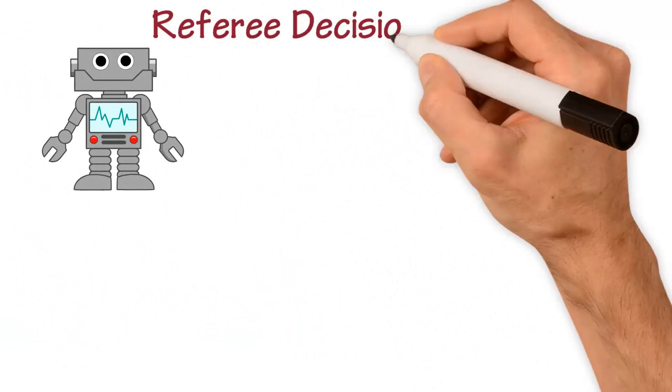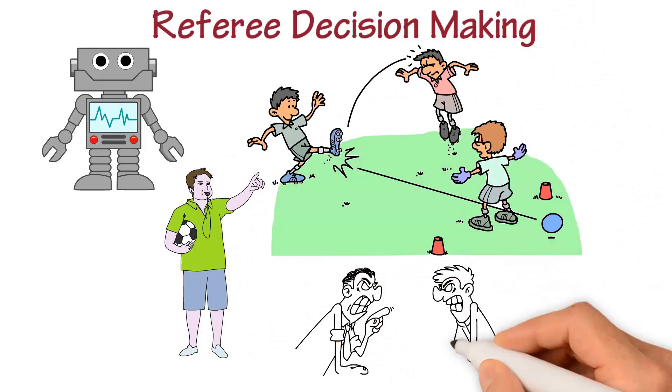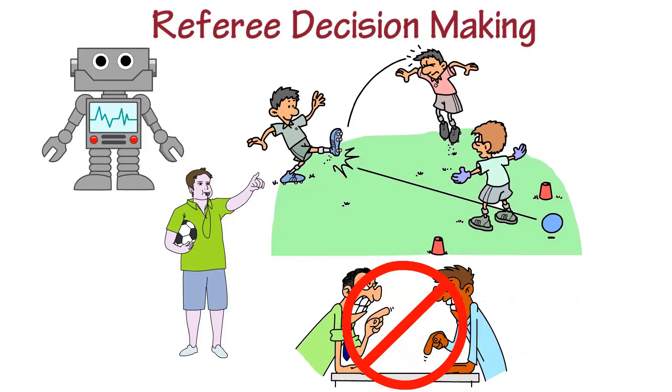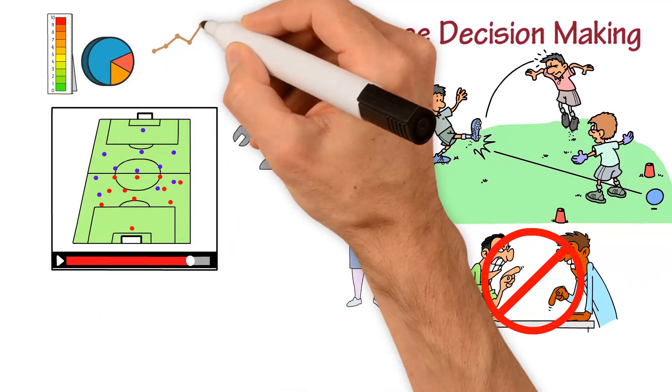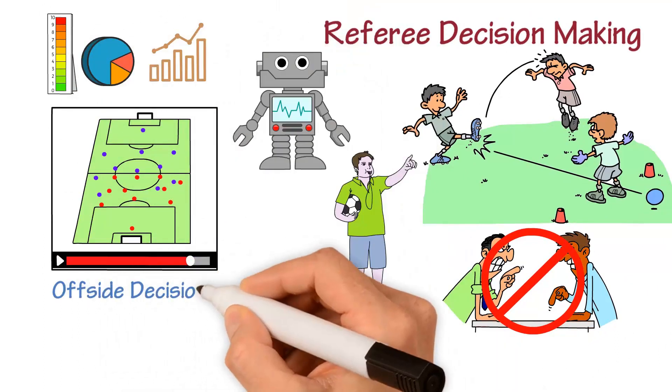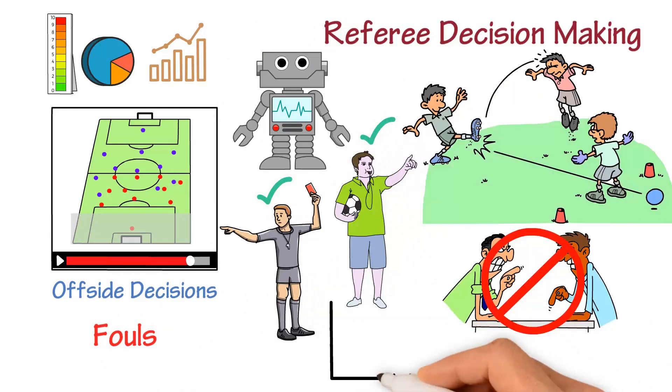In addition, AI technology is also being used to support referee decision-making, ensuring that matches are fair and free from bias. AI algorithms analyze video footage and provide real-time insights into controversial incidents such as offside decisions and fouls. This information supports the referee's decision-making process and reduces the risk of incorrect decisions.